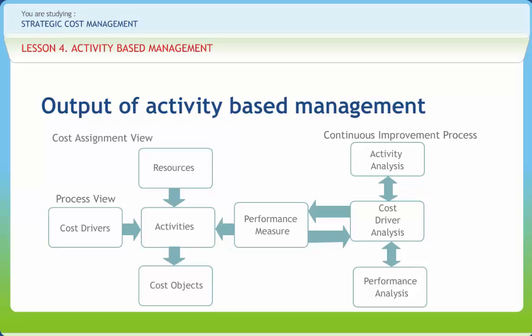Products and services are provided to markets and customers through various distribution channels or contractual relationships. Accurate product and service cost information is a key information output of ABM systems. A cost driver is any factor that causes a change in the cost of an activity. The final output of an ABM system is cost driver information.